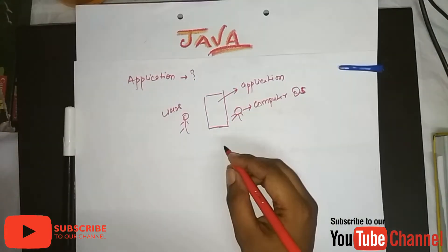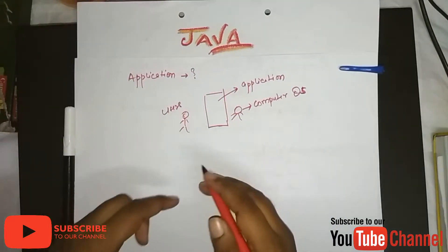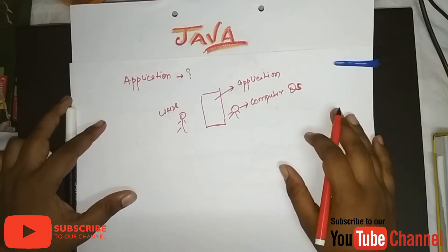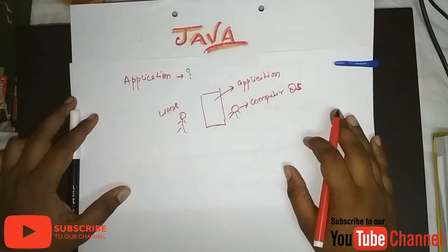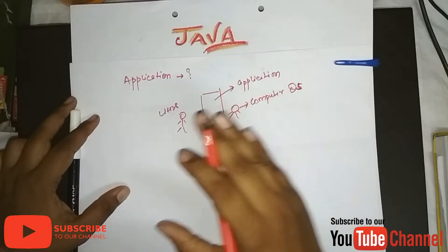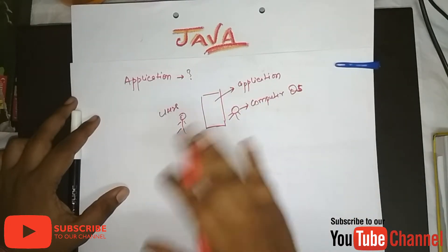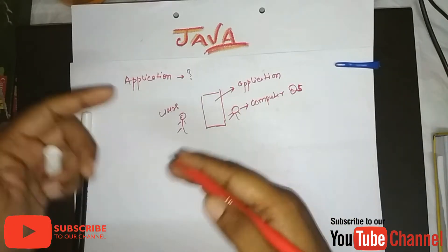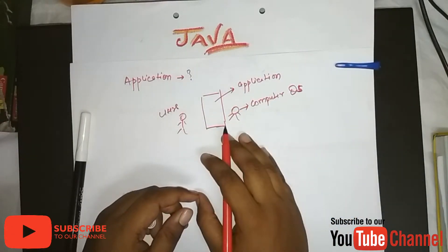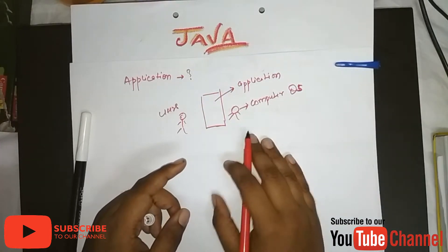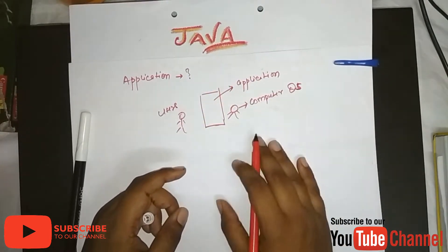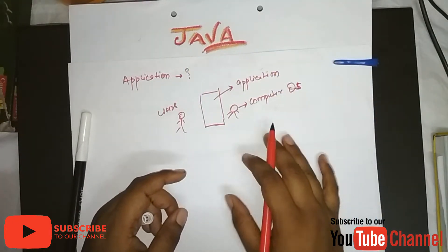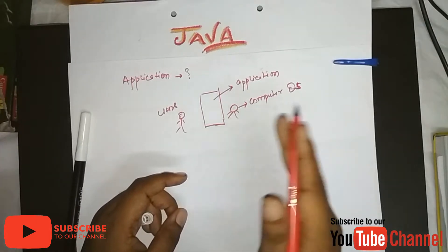We use Java to effectively develop these applications. Before learning any programming language, we have to change the notion that it is difficult. It is not difficult. Just like other languages such as Hindi and English which we use to communicate with each other, programming language is exactly the same way. It also has some grammar, some syntax, and some vocabulary, which we use to communicate with the computer.